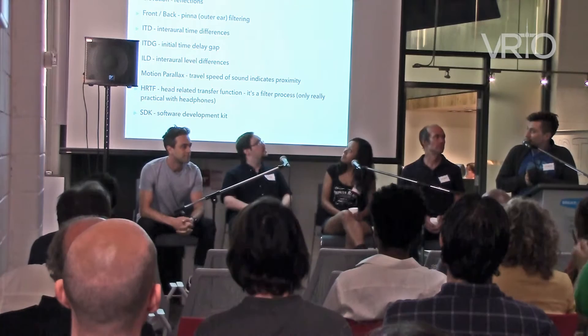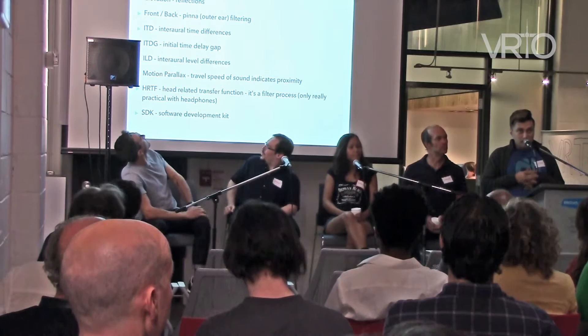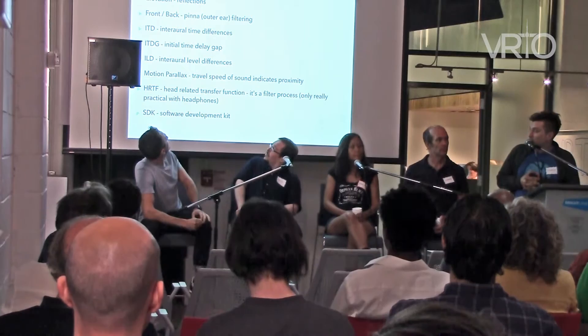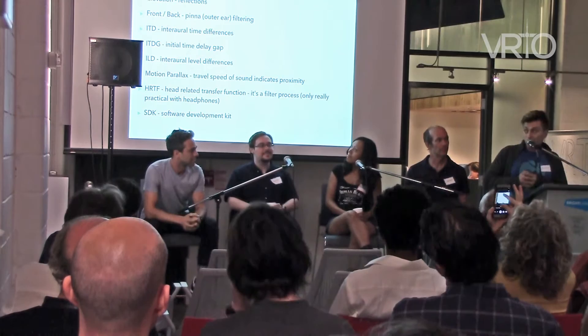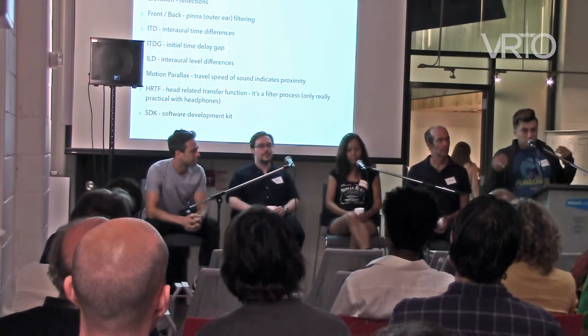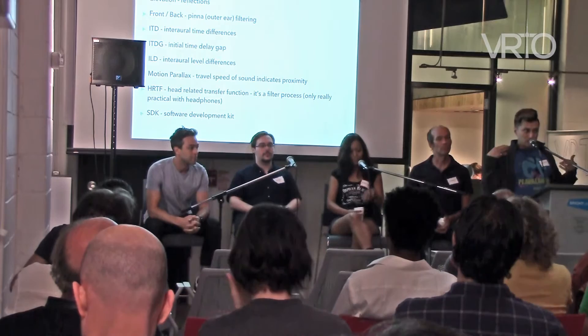There are different ways in which audio can be detected, recognized, and experienced by people. Some of these are easier to record and reconvey than others. For example, elevation is something that we can infer via reflections in the room, but it's otherwise difficult to identify. There's also front-back distinction — pinna filtering is a way that we can decide whether something is in front or behind us.